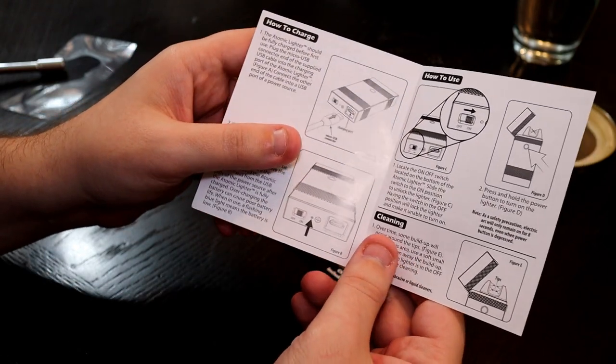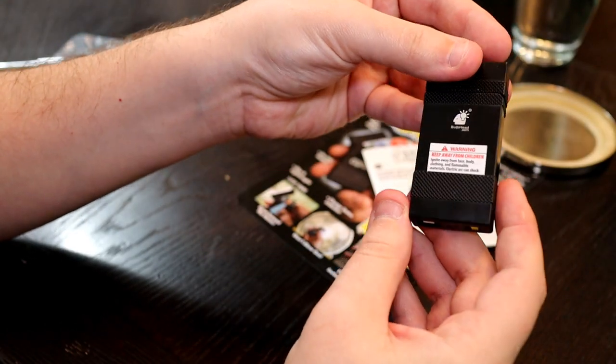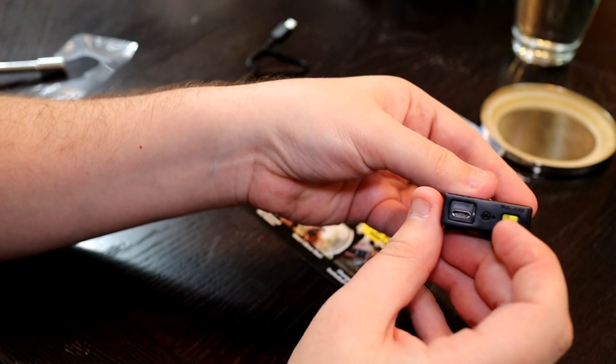The little instruction sheet they give you shows how to charge it and how to use it, basically. It does have an on-off switch on the bottom, and then how to clean the tips. Since this is making some type of plasma arc, it will, over time, build up on those little contacts in there. Atomic Lighter, there's the back, and then the bottom, here's your charging port and here's your on-off switch.